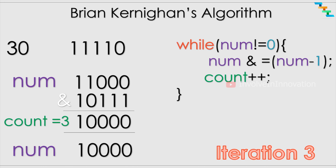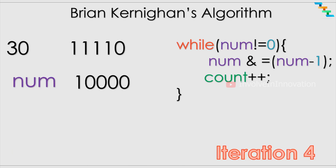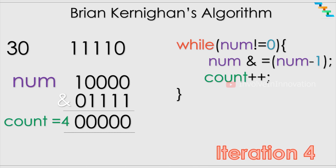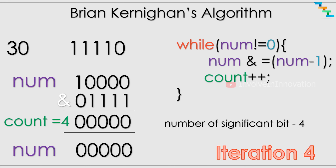The number is now 1 followed by 4 zeros (16). Subtracting 1 gives 01111; the rightmost set bit is at index 4, so starting from index 4 everything gets flipped. AND gives 0, and the count is now 4. Since the number is 0, we break the while loop. The number of significant bits in 30 is 4.